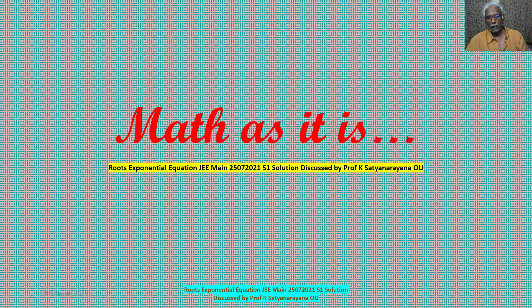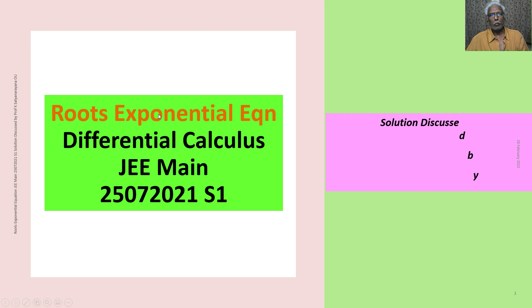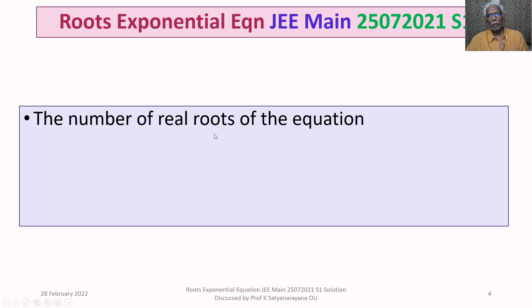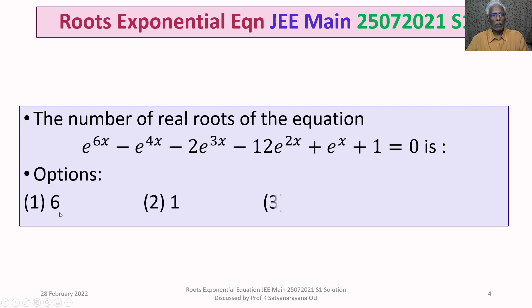We now discuss the solution of a problem from the section differential calculus on the roots of a given exponential equation. This problem appeared in the JEE Main exam held on 25th July 2021 in the morning shift. The problem is: the number of real roots of the equation e^(6x) - e^(4x) - 2e^(3x) - 12e^(2x) + e^x + 1 = 0. Four options are given.